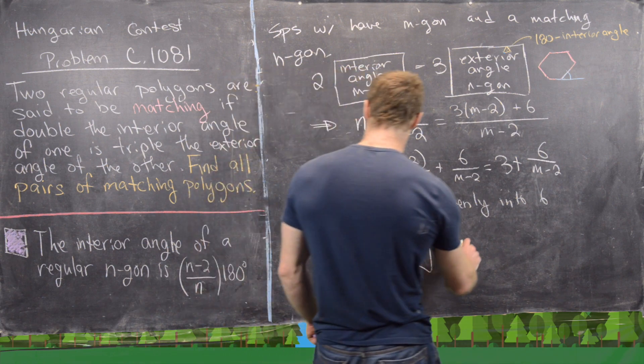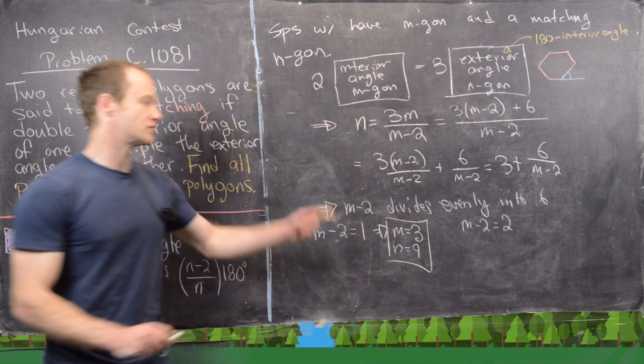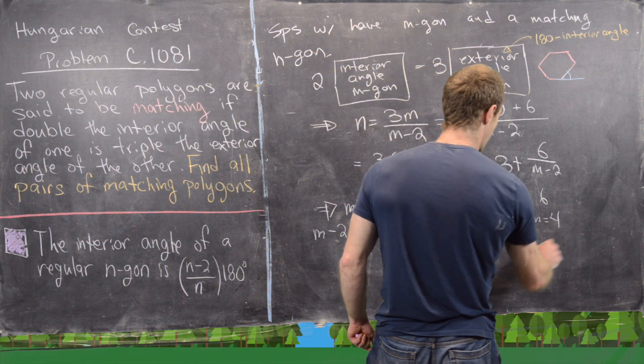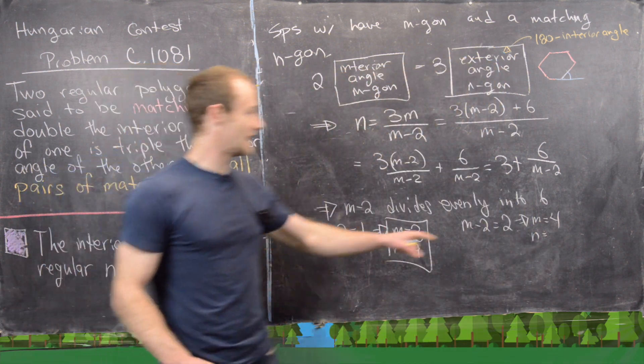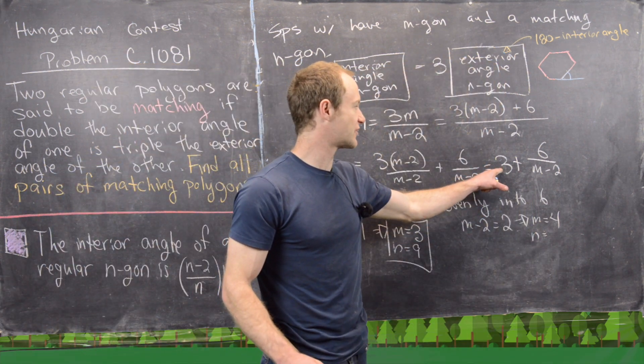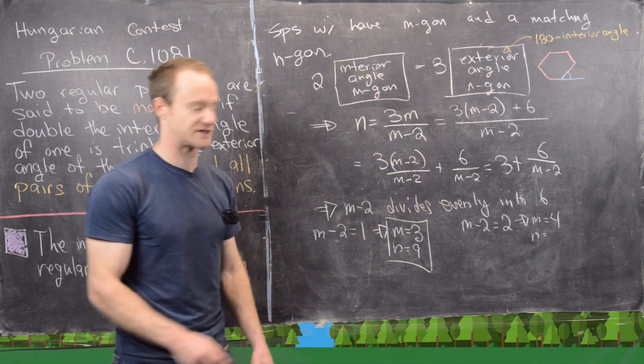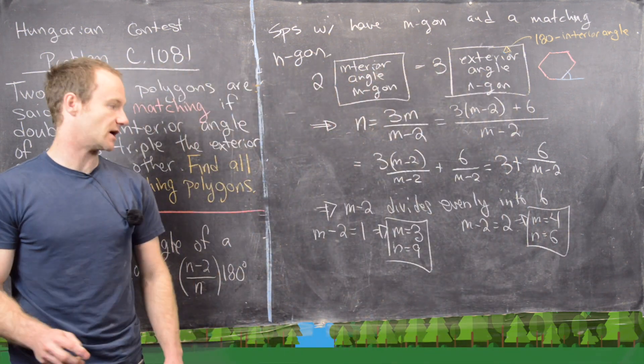And then our next pair will be m-2 equals 2, so 2 divides evenly into 6. But notice that's going to tell us that m equals 4. But then if m equals 4, we'll get n equals 3 plus 6/2, so n is going to be equal to 6. So that means our next pair is a square and a hexagon.